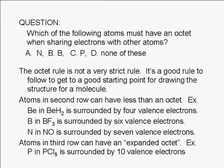Atoms in the third row can have an expanded octet. For example, phosphorus in PCl5 is surrounded by 10 valence electrons.